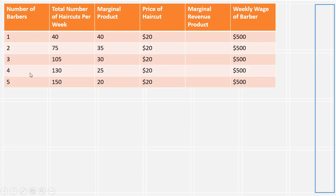Likewise, when we hire the fourth worker, total output of haircuts increases by 25 — 130 minus 105. And the marginal product of the fifth worker is 20, which is just 150 minus 130.